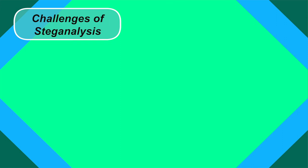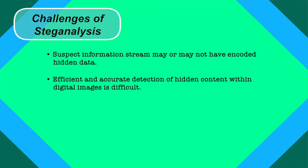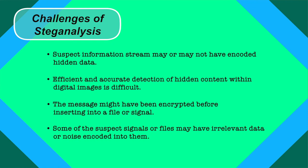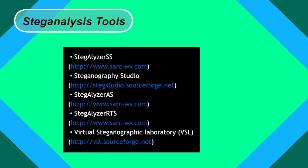Challenges of steganalysis: the suspect information stream may or may not have encoded hidden data. Efficient and accurate detection of hidden content within digital images is difficult. The message might have been encrypted before being inserted. Some suspect files may have irrelevant data or noise encoded into them. Steganalysis tools include Stegalyzer SS, Steganography Studio, Stegalyzer AS, Stegalyzer RTS, and Virtual Steganographic Laboratory (VSL).